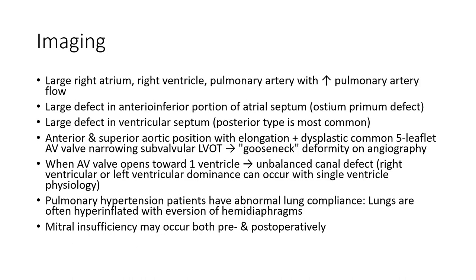On imaging, there is enlargement of the right atrium, right ventricle, and pulmonary artery with increased pulmonary blood flow. The defect is located in the anterior inferior portion of the atrial septum. Posterior primum defects and right ventricular defects of the posterior type are most common.